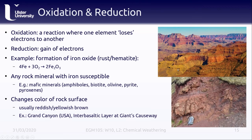Oxidation usually turns rocks a reddish yellowish brown color, depending on the different minerals involved. The Grand Canyon is a famous example, with its nice red and orange colored rocks as a result of oxidation weathering. Similarly, at Giant's Causeway, there is an interbasaltic layer — an orange stripe of rock between two different basaltic lava flows — where basalt has weathered over about a million years and transformed into laterite, a sedimentary rock formed by the weathering of basalt with a characteristic orange-brown color.